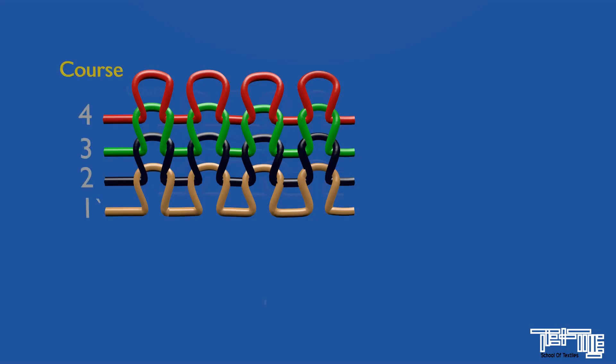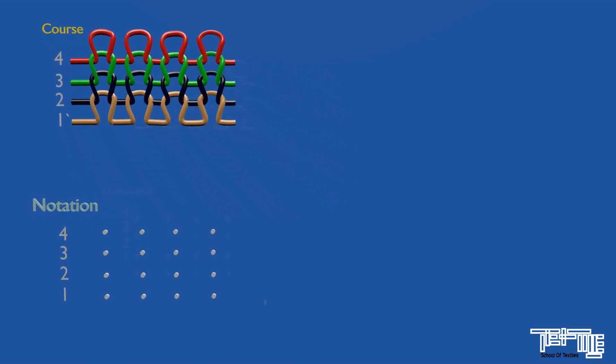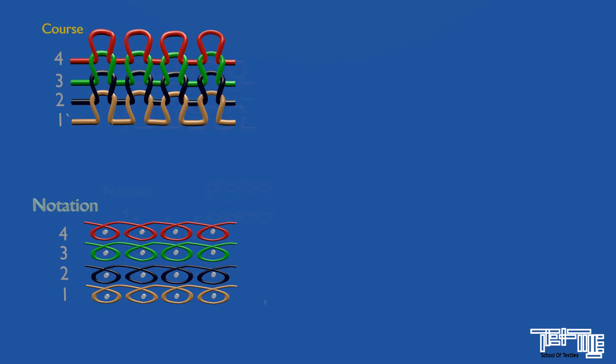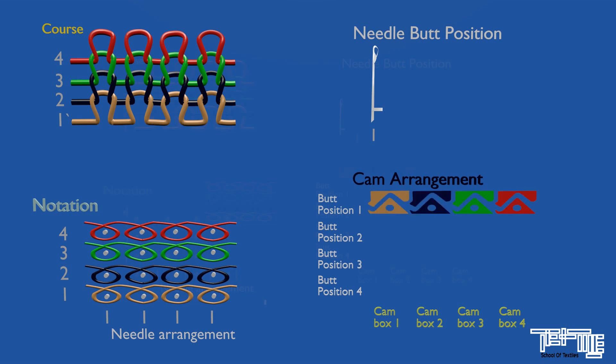Here is the animated version of our looping diagram. We know needle makes whales and only one type of whale line is found here. So the needle with butt position one is needed here. As there is only one butt position needle, single cam track is needed here.